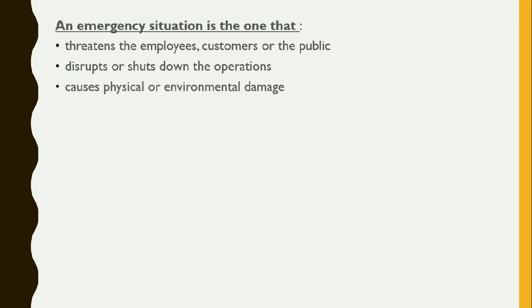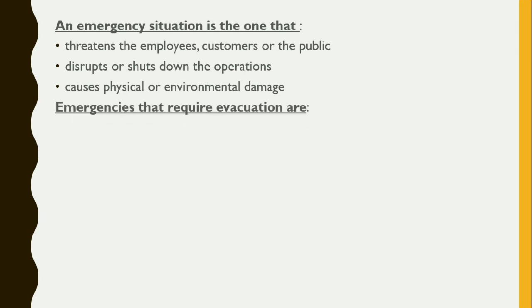An emergency may also disrupt or shut down operations — whatever work is going on may be halted — and it occurs when it causes physical or environmental damage. Nowadays, due to the lockdown, shops have been shut down, causing damage and fear among people, which can be considered a type of emergency situation.